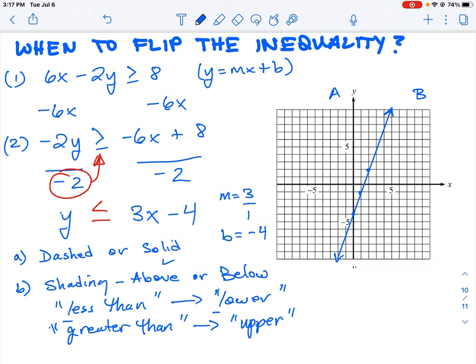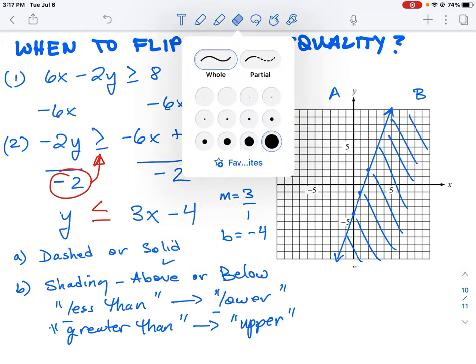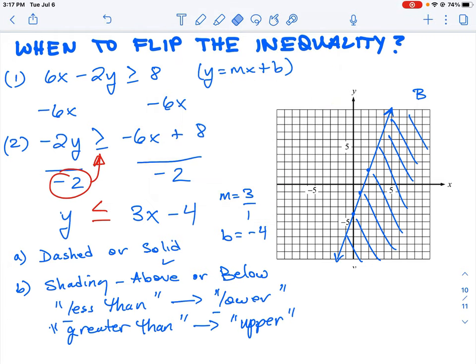We know it's less than is the inequality. Therefore, the shading part here will be below the line. It'll be this part here that I've labeled B. I'm just going to get rid of those letters so we don't get too confused.